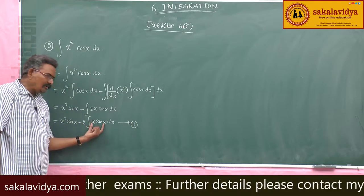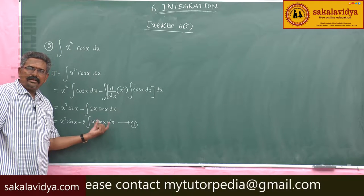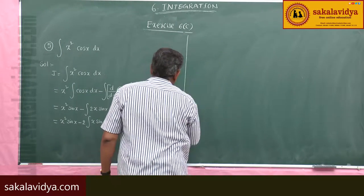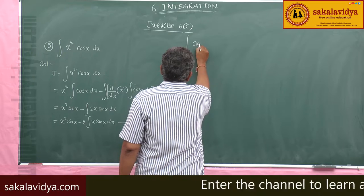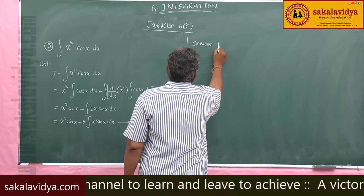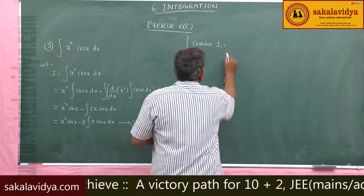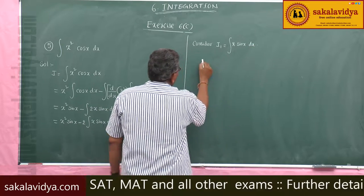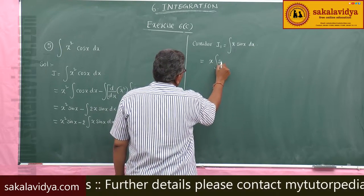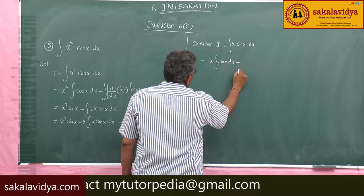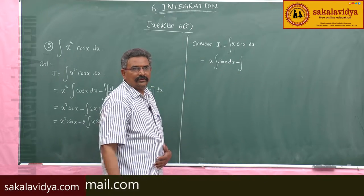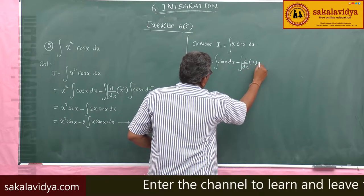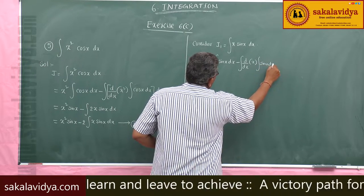Again, we have to find the integral of x sin(x) dx using integration by parts. Consider I₁ equals the integral of x sin(x) dx. Here x is the first function, so we write x times the integral of sin(x) dx, minus the integral of d/dx of x times the integral of sin(x) dx, whole dx.